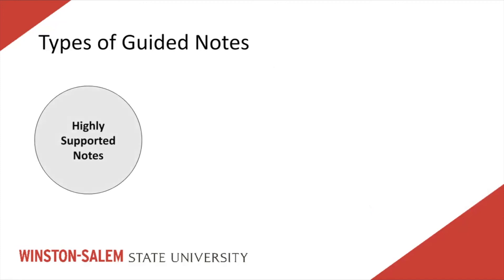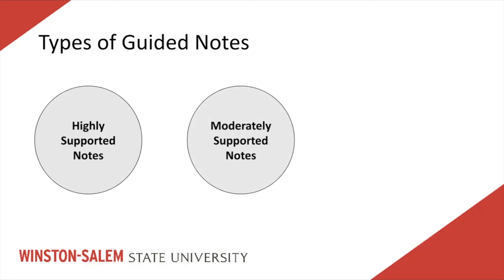Highly supported notes strategically replace keywords in the document with some blanks, providing a high level of scaffolding. You are able to limit the number of fill-in-the-blanks at this level. Moderately supported notes strategically replace more keywords and phrases in your document with blanks, providing a moderate level of scaffolding. Outlined notes eliminate most of the text so that you have a note-taking outline, and are best used with students who have learned how to summarize key constructs.